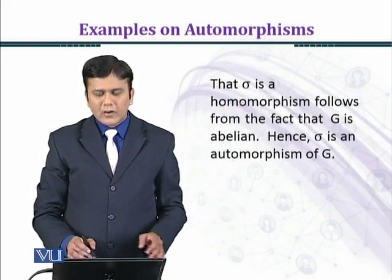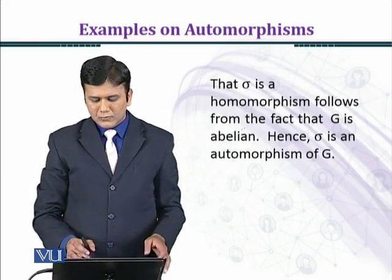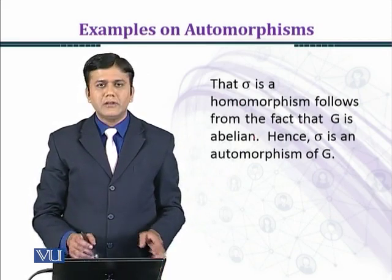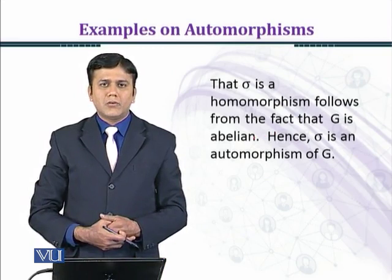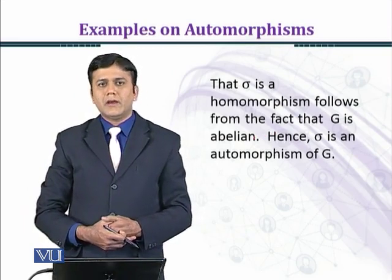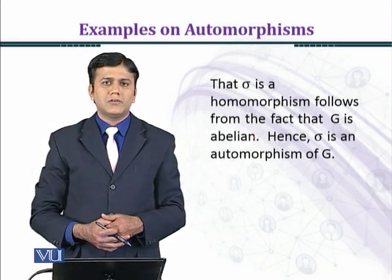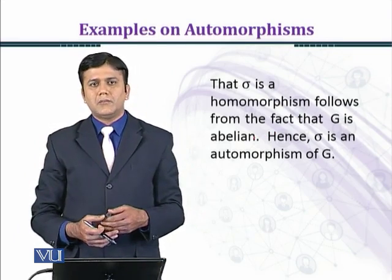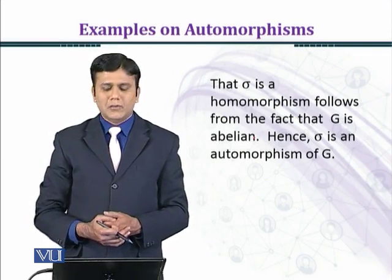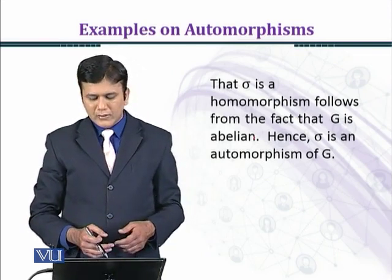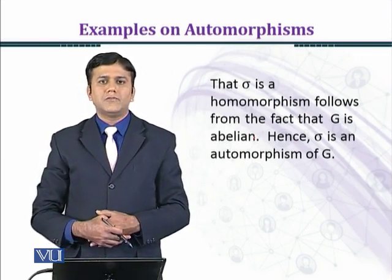Sigma is a homomorphism follows from the fact that G is abelian. So because G is an abelian group, this is why sigma is a homomorphism. We have checked the three properties of automorphism: sigma is bijective and homomorphism. So sigma is an automorphism of G.